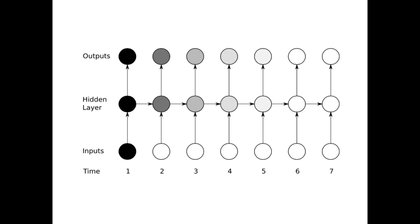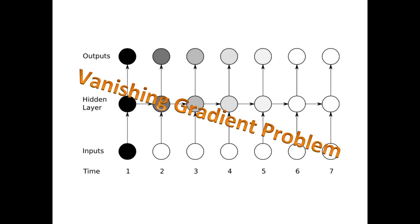Unfortunately with recurrent neural networks this leads to a concept called the vanishing gradient problem. It essentially means the further away from the original input you get, the less value it's going to add, and you start losing that original state. This is the vanishing gradient problem.